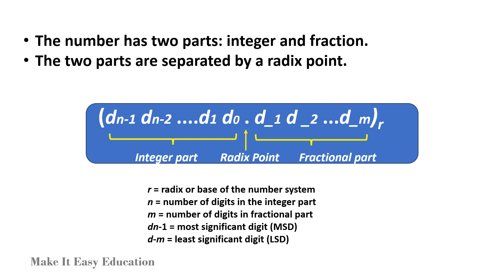The number is represented as this. The number has two parts: integer and fraction. The two parts are separated by a radix point. R is the radix or base of the number system. N is the number of digits in the integer part. M is the number of digits in fractional part. Dn-1 is the most significant digit. D-m is the least significant digit.